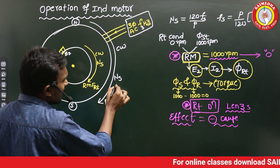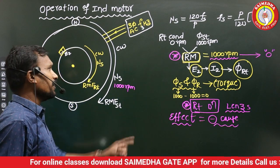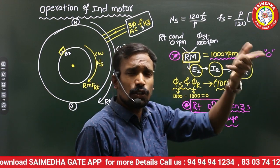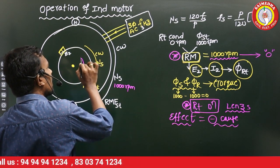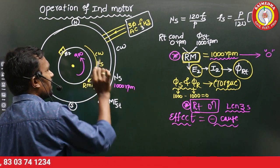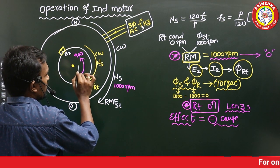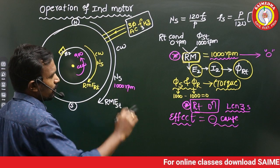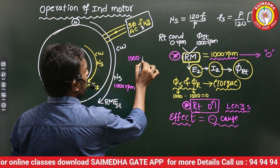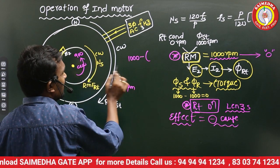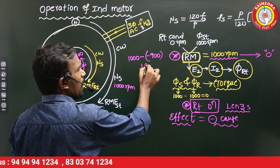The stator flux rotates in the clockwise direction at 1000 RPM. If we rotate the rotor in any direction, the relative motion will reduce. If my rotor rotates in the counterclockwise direction at 900 RPM — that is counterclockwise, and the stator is clockwise at 1000 RPM — the relative motion would be 1000 minus (−900) = 1900 RPM. The relative motion increases, not decreases. This does not satisfy Lenz's law.